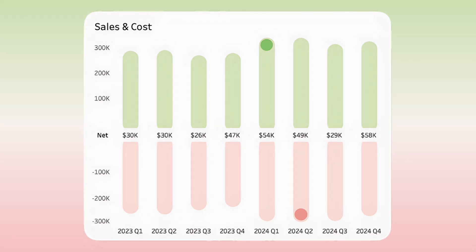To create this diverging bar chart, I'll be using two data sources, one for sales and one for cost. Then between the bars, I'll calculate the net by blending the data sources. I'll add these darker circles to show the max values, and I'll filter down to the last eight quarters.